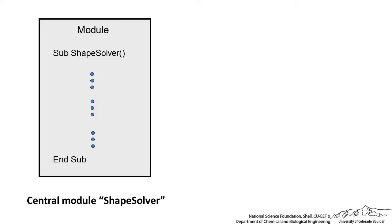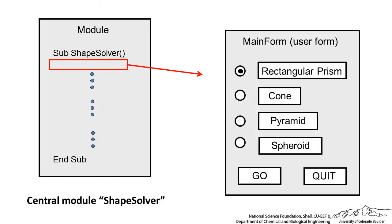The best thing to do when creating a user form is to start not with a user form, but with a module — this is our base module. Here we have a central module I'm going to name ShapeSolver. ShapeSolver is the sub in VBA that we run, and when we run it, it's going to open up our user form. So we're not actually running the user form; we're running a module that will open up the user form.